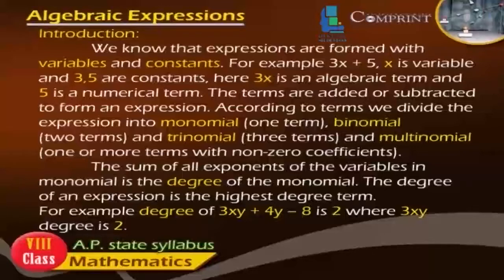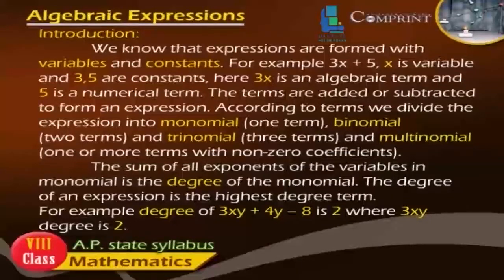According to the number of terms, we divide expressions into: monomial (1 term), binomial (2 terms), trinomial (3 terms), and multinomial (one or more terms) with non-zero coefficients. The sum of all exponents of the variables in a monomial is the degree of the monomial. The degree of an expression is the degree of its highest degree term.